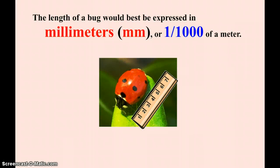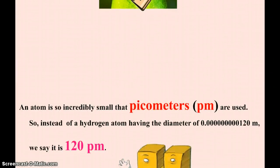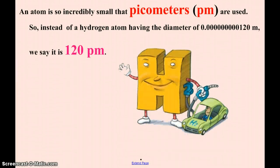We can also look at small things. This little bug is almost 7 millimeters long. Again, I could say 0.007 meters, since each millimeter is a thousandth of a meter. But it's just nice to say 7 millimeters instead. And we also have teeny, tiny things, like atoms. The diameter of a hydrogen atom is 0.00000000120 meters. Not as easy to say as 120 picometers.